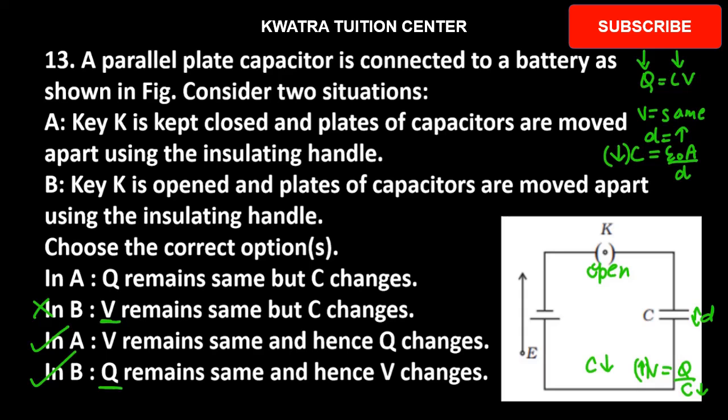Because here what is changing? C is changing, distance is changing. C will change and on top of that we made it open circuit. So because of this, Q will not change. Q will remain same. Charges will remain same because of law of conservation of energy, and hence V changes. And if Q remains same and C is changing, then V will also change.